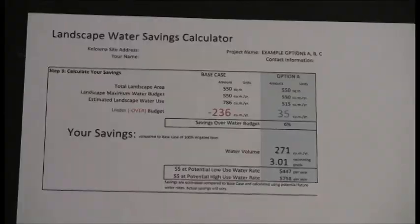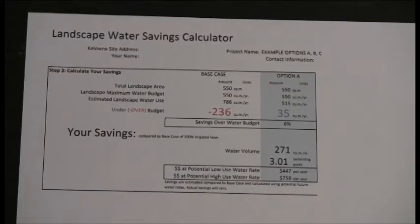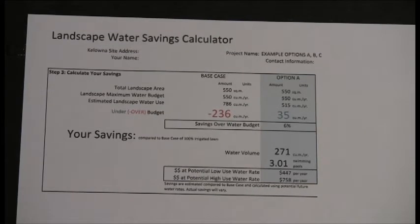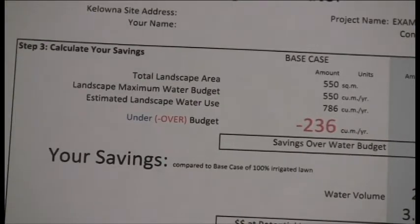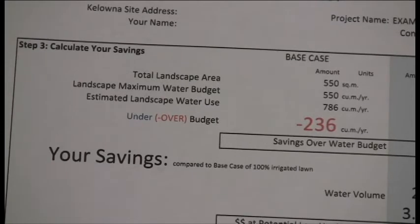Step three is to calculate your savings. Before considering other options, let's see how Option A compares with the base case. Looking at the bottom of the program, the numbers are calculated for you. As well as restating the total landscape area, the calculator provides a landscape maximum water budget.